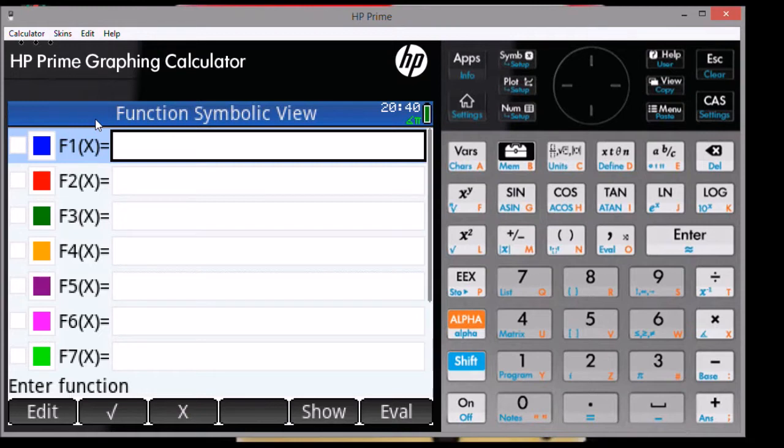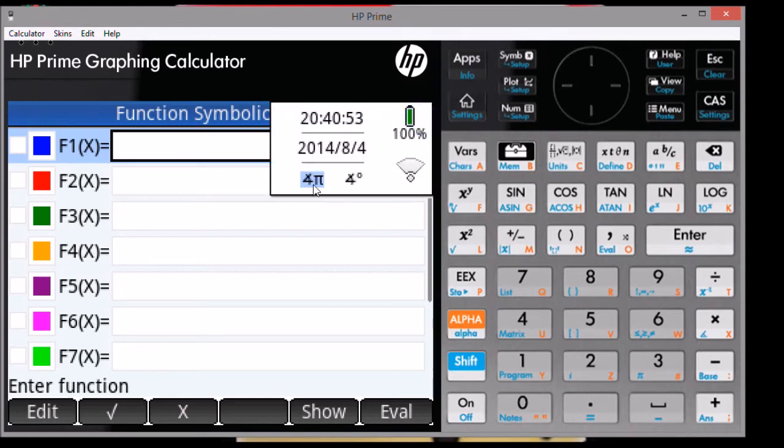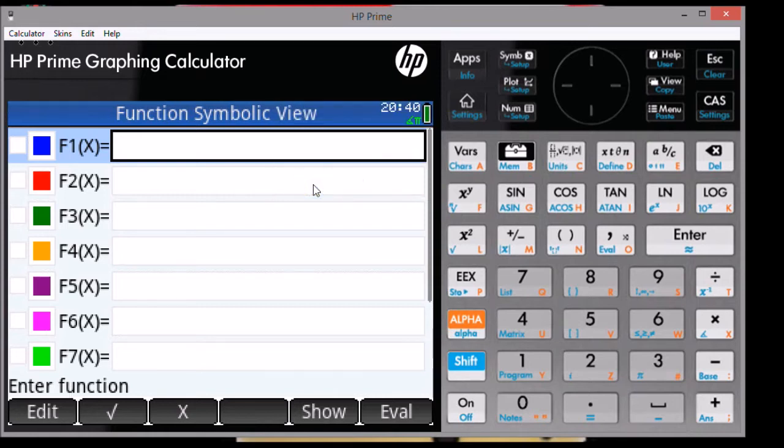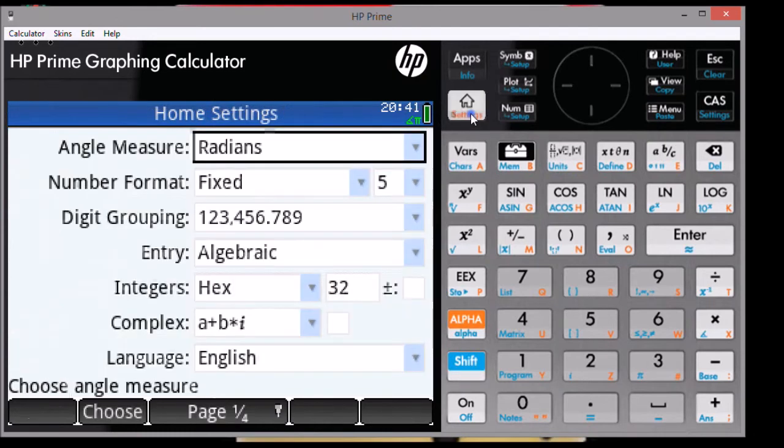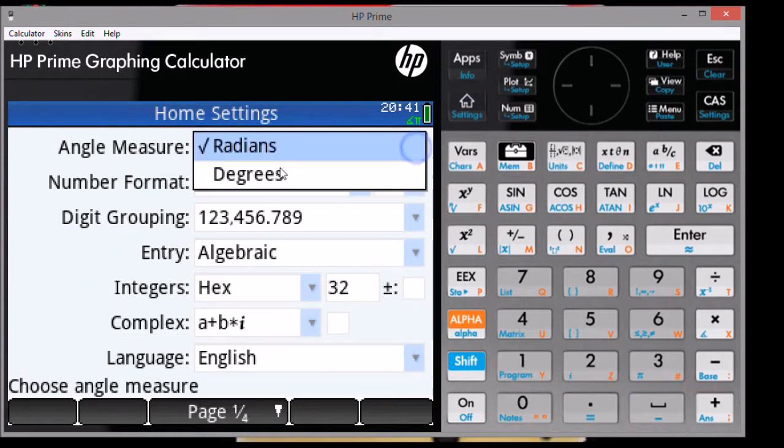You want to make sure that angle mode is set to radians. This is important if you're going to be using trigonometry functions. A fast way to do this is to click this upper right hand corner of the screen and select the angle symbol and pi, and that will put the calculator in radian mode. You can also go shift, home settings, angle measure, and select radians.